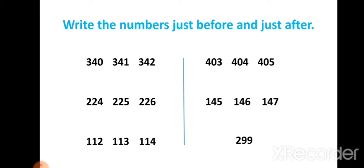Next example: here the given number is 299. We have to write just before number of 299. Which number comes? That is 298. So 298 is the before number of 299, and after 299 comes 300.